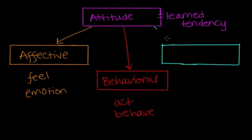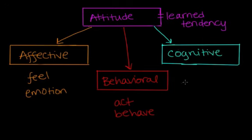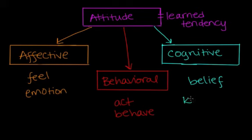And the last component is called the cognitive component. In the cognitive component, we form thoughts, we form beliefs, or we have some sort of knowledge about a subject or an object or a topic, and that's going to influence and shape our attitude. So an example here is saying, I believe spiders are dangerous. We have a belief that they are dangerous, and that's going to form our attitude.